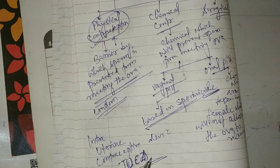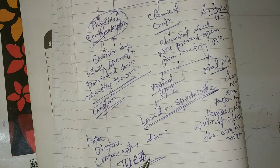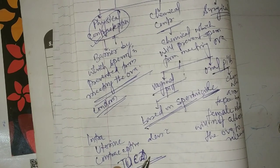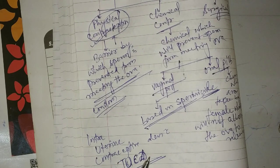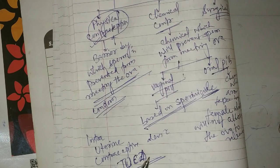This device prevents the sperm from reaching the ova, and fertilization cannot occur.